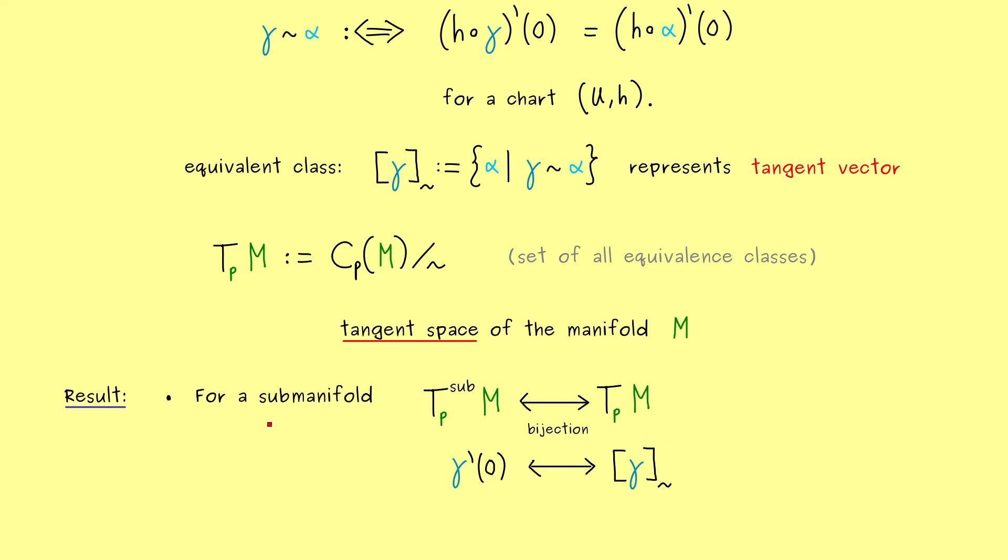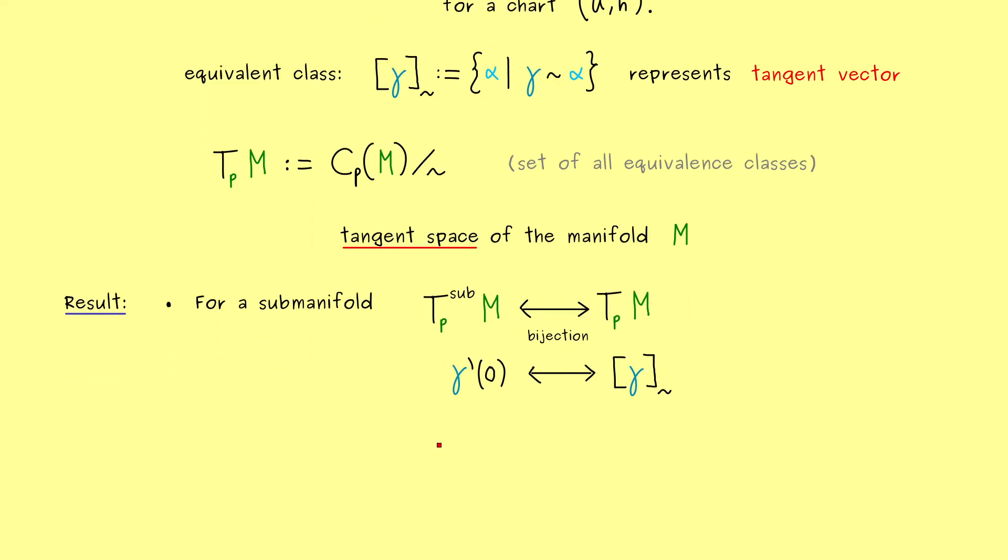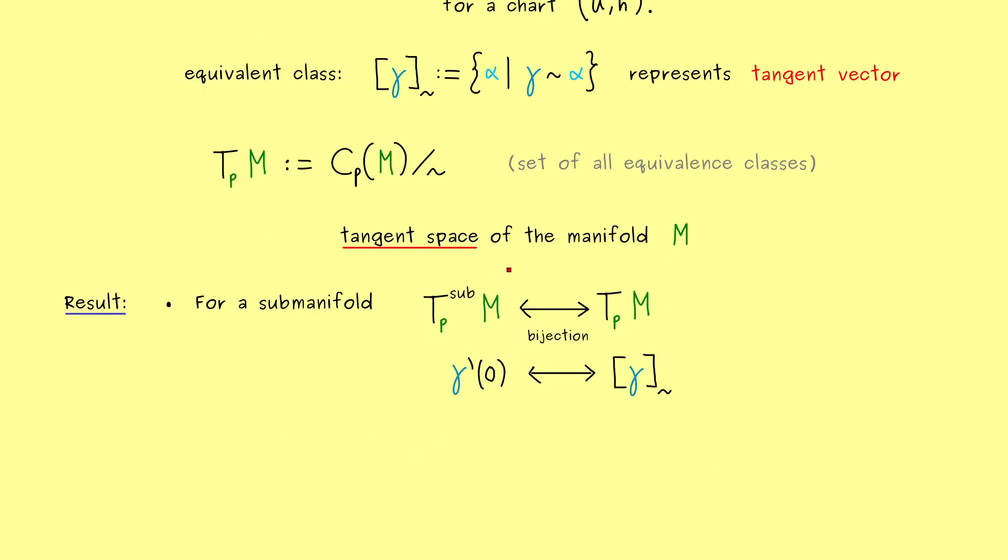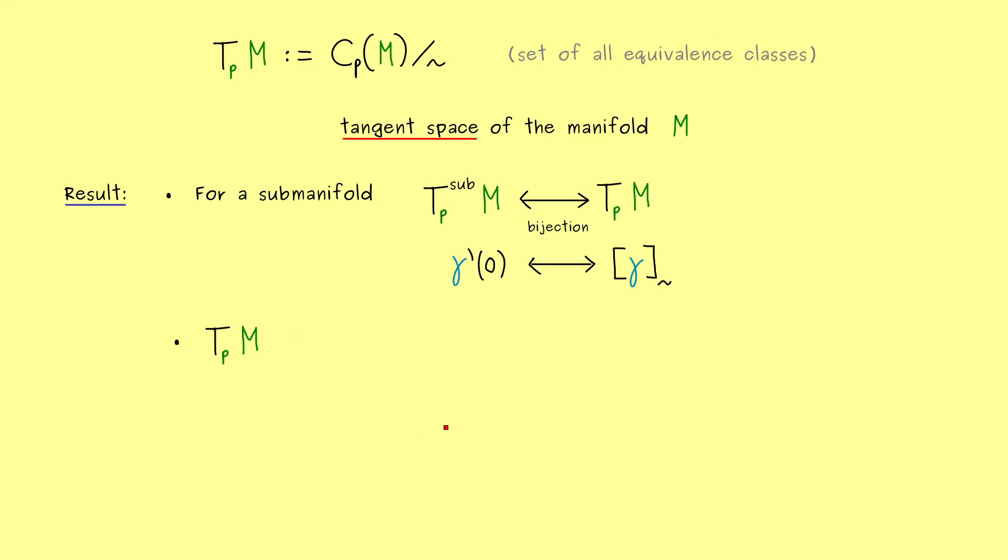Hence we see, for a submanifold, now we can choose which tangent space is better for our calculations. In fact, because of this bijection, we will often not distinguish between both tangent spaces.